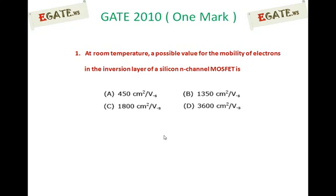A. 450 cm² per Vs. B. 1350 cm² per Vs. C. 1800 cm² per Vs. D. 3600 cm² per Vs.